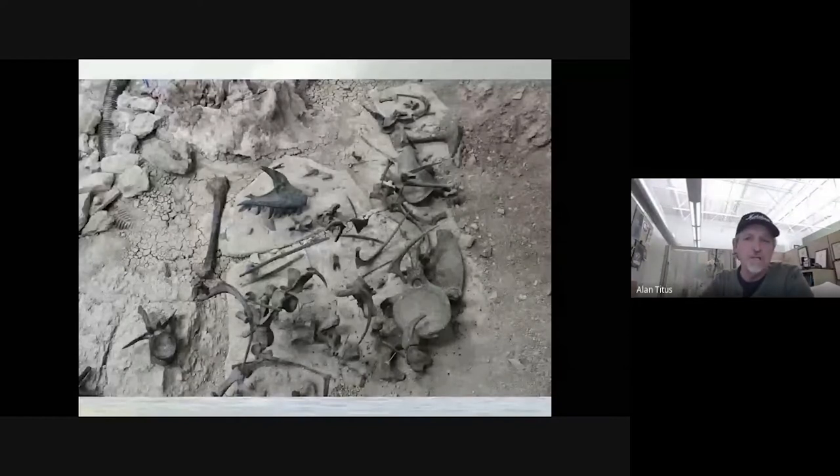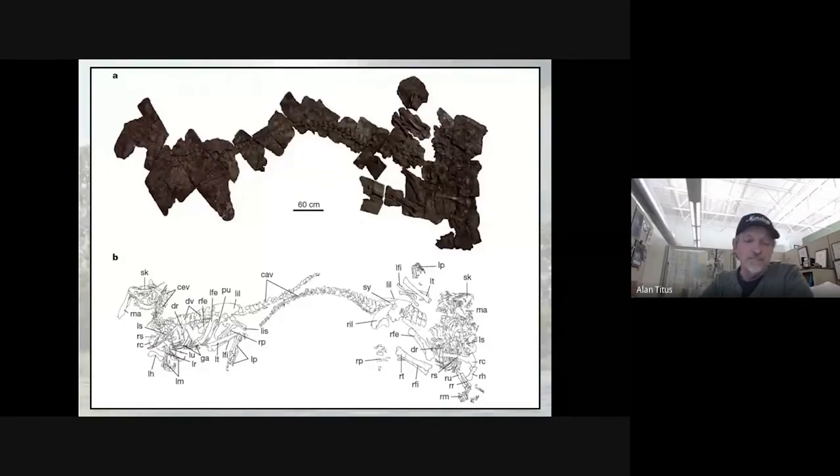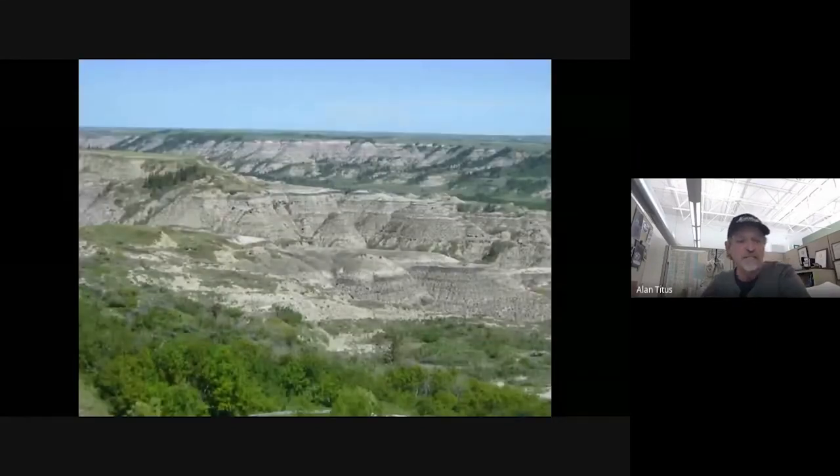There's another example, the Yutyrannus huali site in China, in the Yixian formation, about 125 million years old, near the Berriasian-Aptian boundary, where we have two adult individuals laid out tail to tail, relatively complete, showing soft tissue preservation. But whatever brought these two animals together killed two adults and put them in the same place. So an example of a lagerstätte with two large theropods. These are seven-meter-long individuals.